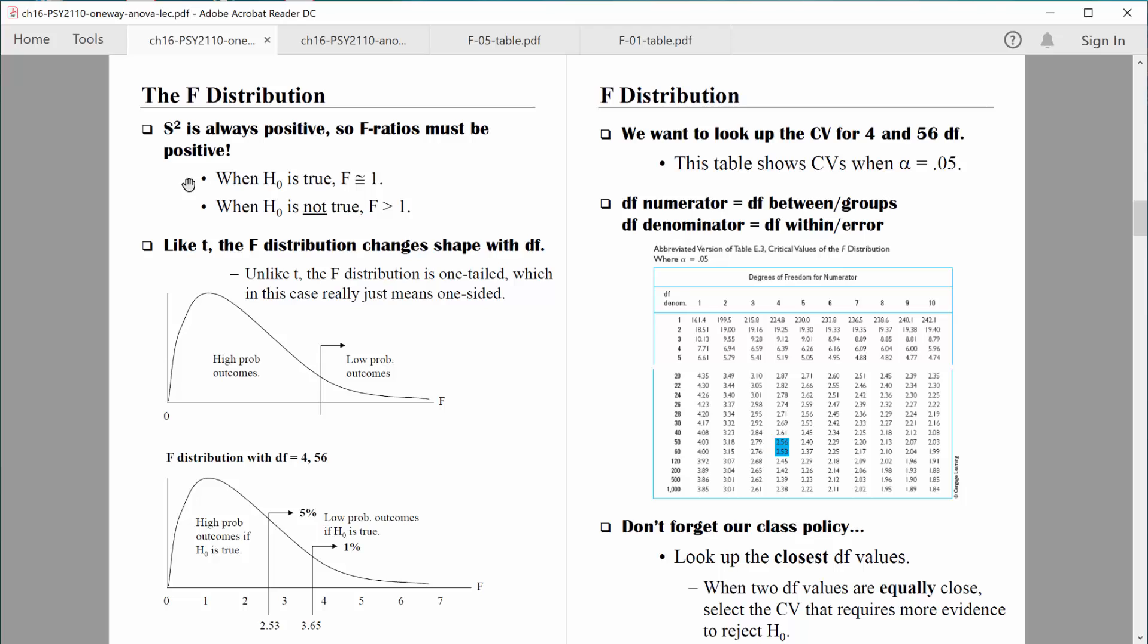So how much greater than one does it need to be? As you know, in order to figure that out, in order to find a critical value, we typically need to compute degrees of freedom. Because we understood once we started doing t-tests that the t distribution changes its shape as we've measured more people. Well, the F distribution changes its shape too based on its degrees of freedom, which is based on the number of people that we've measured. And it's also based on the number of groups we're comparing.